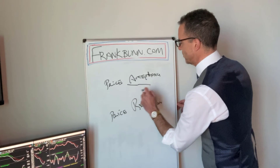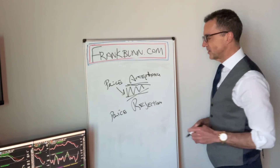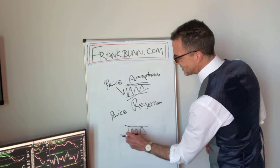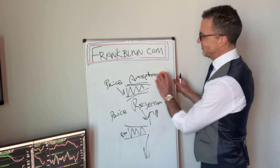Price acceptance looks like a general consolidation pattern, with price trapped between two levels. When we have that area of price acceptance and we break out of it strongly one way or another, we call this price rejection. Those two concepts are very important.